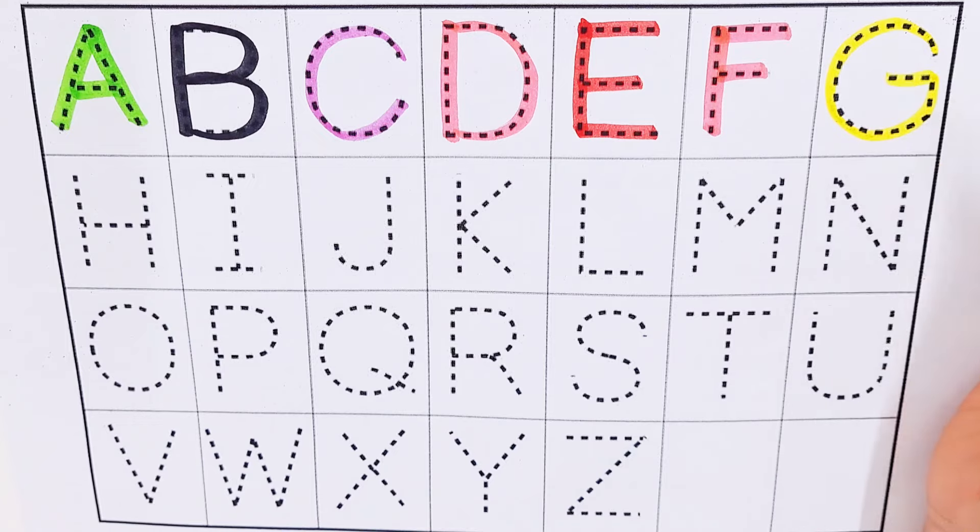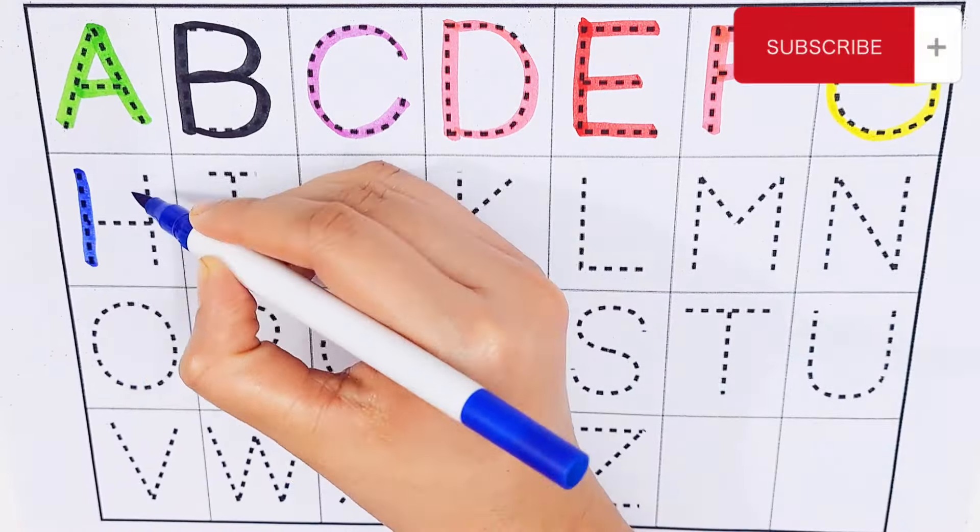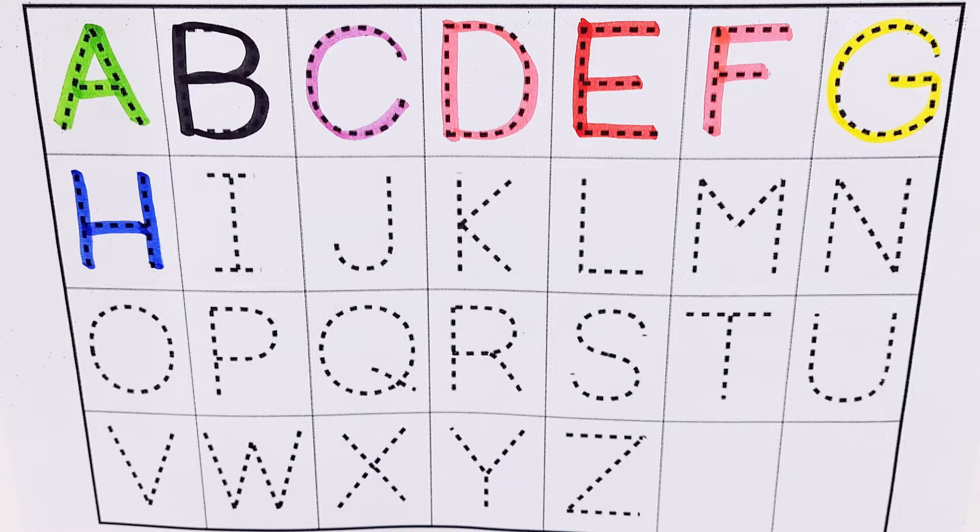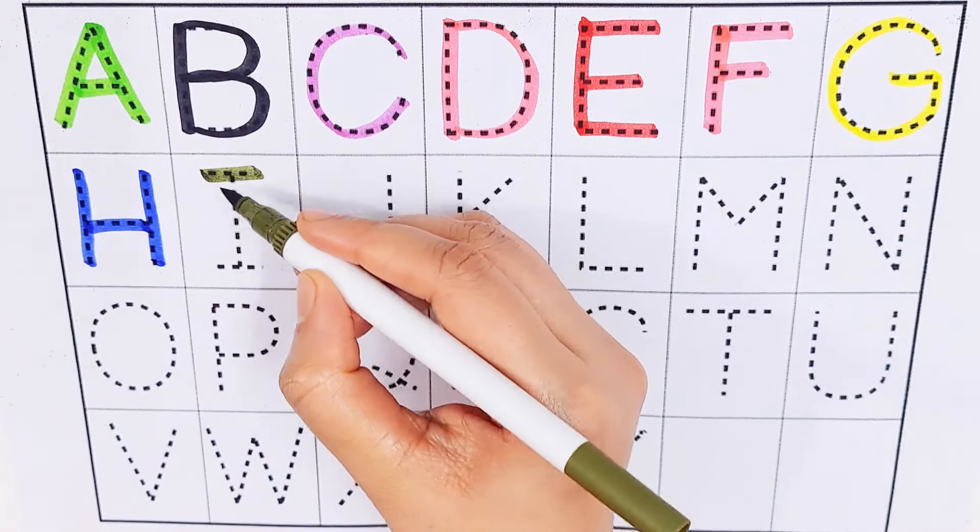Yellow color. G, G for glass. Dark blue color. H, H for house.